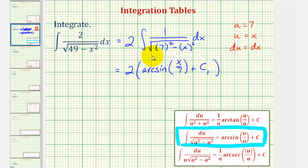Notice now when we distribute, we would have two arcsine of x divided by seven, and we'd have plus two times c sub one, but we'll go ahead and let two times c sub one be equal to c, so we'd just have plus c. This would be our anti-derivative.